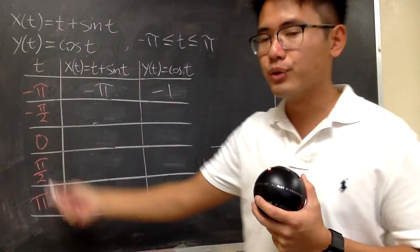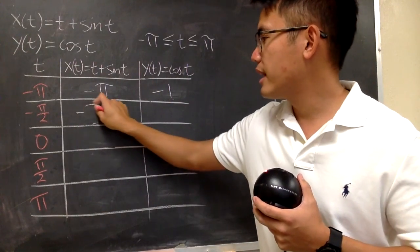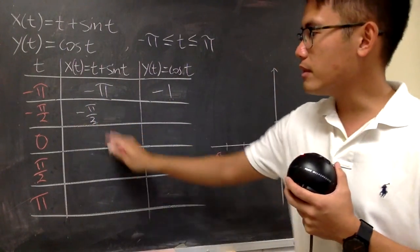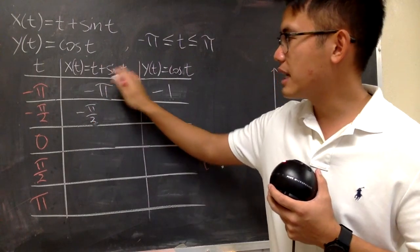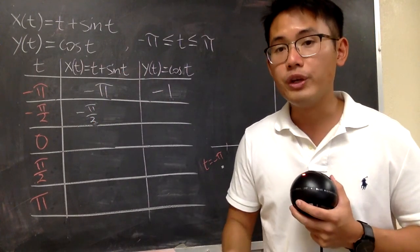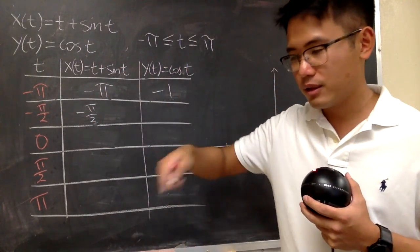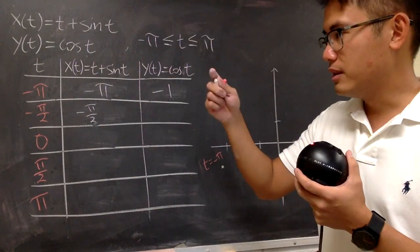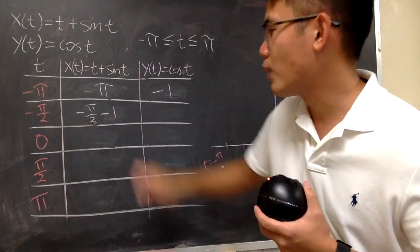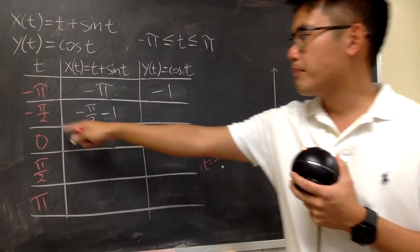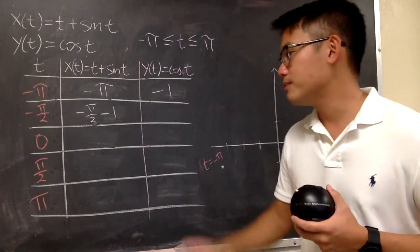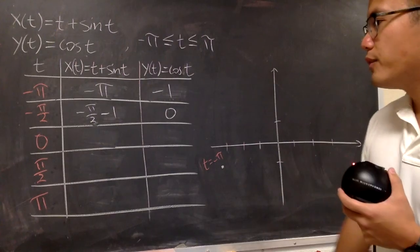Plug in negative pi over 2 into here and here, I get negative pi over 2, and when we have sine of negative pi over 2, we get negative 1, because it's like down, like 0, negative 1, if you look at the unit circle, so you have negative 1. And plug in negative pi over 2 into cosine, well, you get 0.